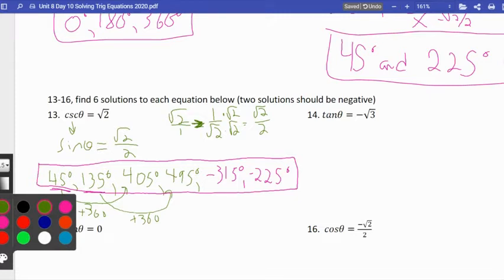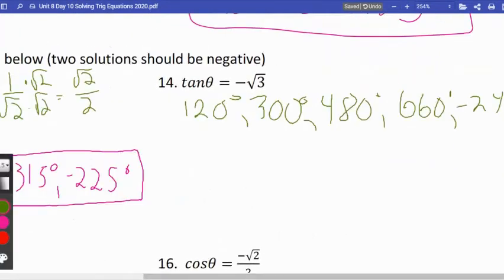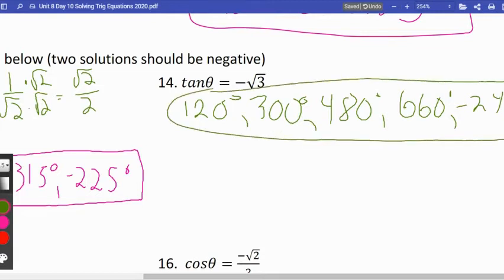When is tangent negative root three? Tangent is negative root three. Let's think about this for a second. That's going to be at 120, and that's going to be at, let me think, down low in quadrant four is going to be 300. So I'm going to do the same thing I did last time. I'm going to add 360. 120 plus 360 is 480. And then I'm going to add 360 to 300, and I get 660. And then I'm going to minus 360. 120 minus 360 is negative 240. 300 minus 360 is negative 60. So there we have it.